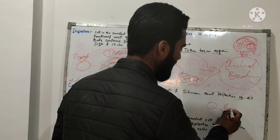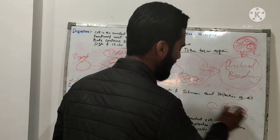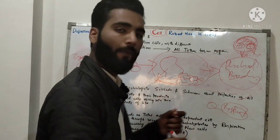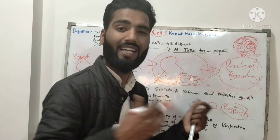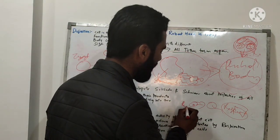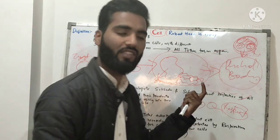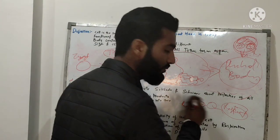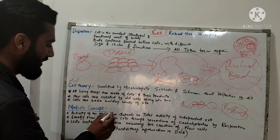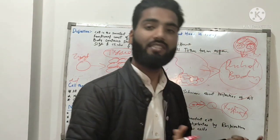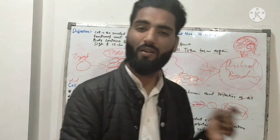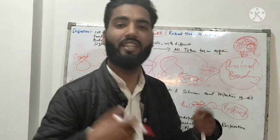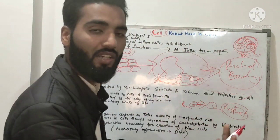For example, one cell performs respiration — that is its independent activity. Another point: energy flows within cells through breakdown. When a cell breaks down carbohydrates through respiration, energy is generated and flows from one cell to another. Also, cells contain the information necessary for the creation of new cells.